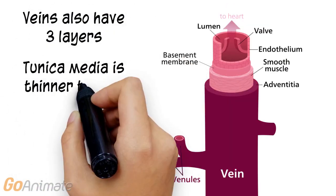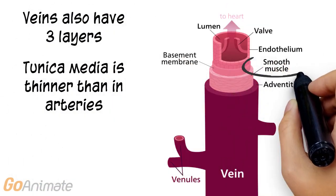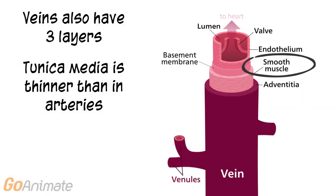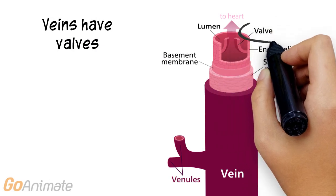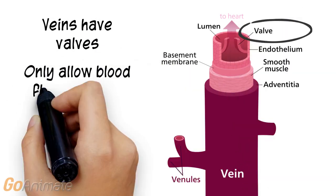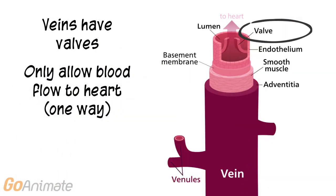Veins have three layers, but the tunica media is thinner than in arteries. Veins have one-way valves that only allow blood flow toward the heart.